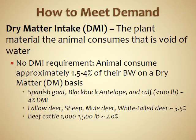An important concept to understand is dry matter intake — the plant material the animal consumes that is void of water, meaning whatever the animal consumes minus water. This is important because different species consume different amounts of plant biomass, with implications for fire management, rangeland management, and livestock production. Animals consume approximately 1.5 to 4% of their body weight on a dry matter basis. The Spanish goat, black buck antelope, and calves under 100 pounds consume about 4% of their body weight — a 4% dry matter intake.